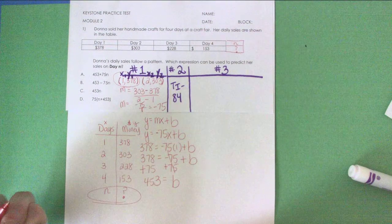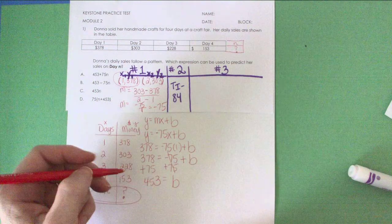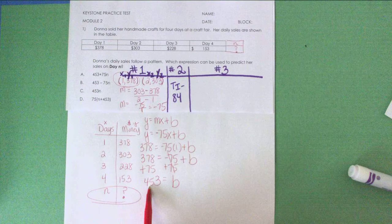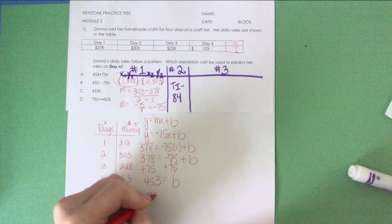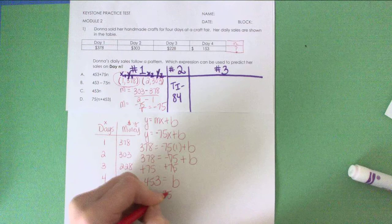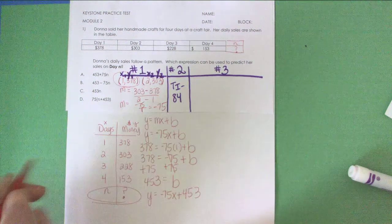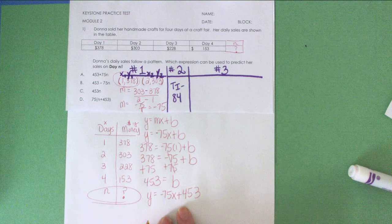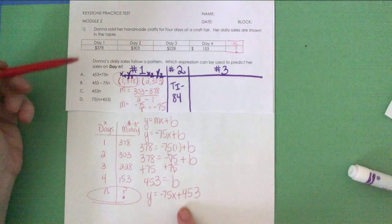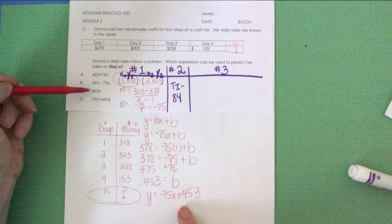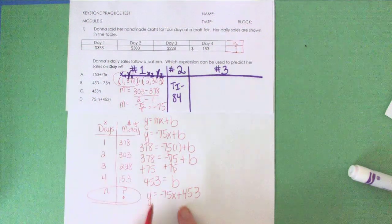So my final equation, putting it all together using a slope of negative 75 and a B of 453, gives me Y equals negative 75X plus 453. Now I look at this equation and I look at my answer choices, and I notice that three of them start with 453.